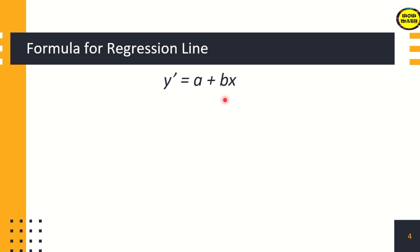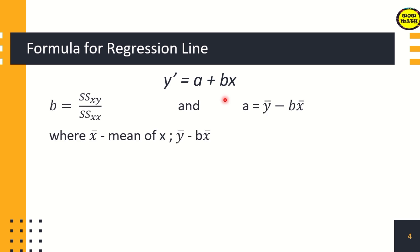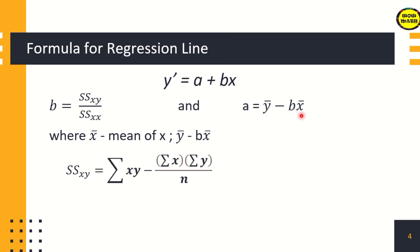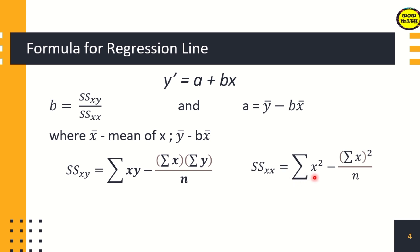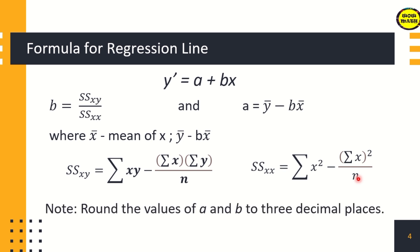The equation of the regression line is y' = a + bx. To solve for b, use the formula: sum of squares of xy divided by sum of squares of x. For a, use: mean of y minus b times the mean of x. The sum of squares of xy equals the summation of xy minus the quantity (summation of x times summation of y) over n. The sum of squares of x equals summation of x² minus (summation of x)² over n. Round the values of a and b to three decimal places.